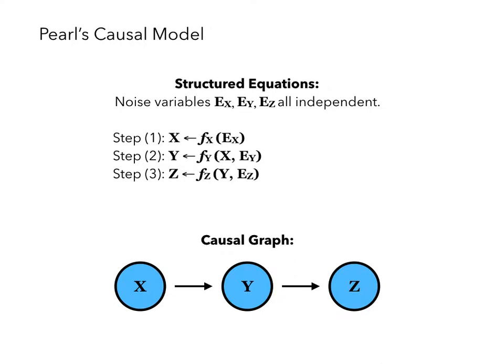Now since Y is a function of X, we say that X causes Y. And since Z is a function of Y, we say that Y causes Z. We can represent these functions graphically using a causal graph, which is a directed and acyclic graph. In this graph, if X points to Y, we say that X causes Y.